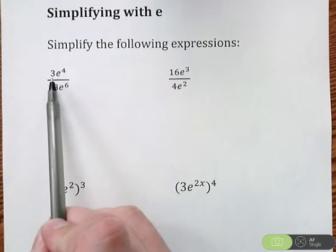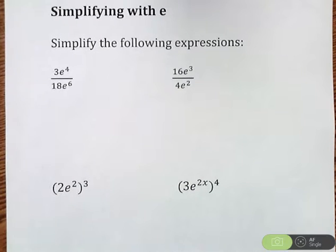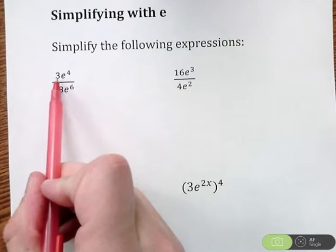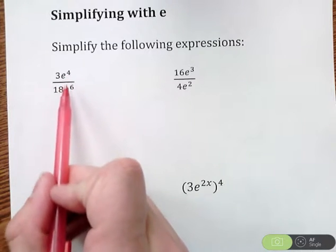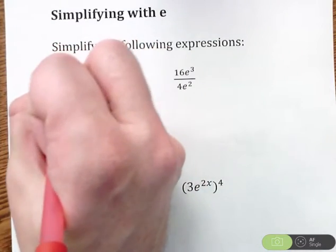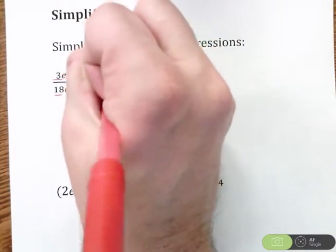So this first expression, I have 3e to the 4th divided by 18e to the 6th. The way I kind of break it down is I have the numbers 3 and 18 and then I have e to the 4th and e to the 6th. So I'm going to focus on 3 over 18 first.